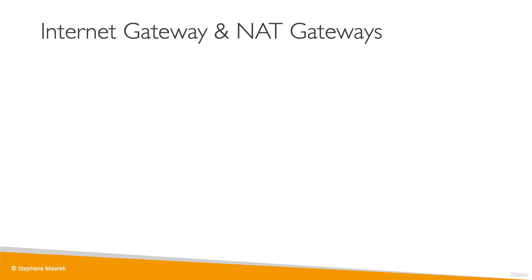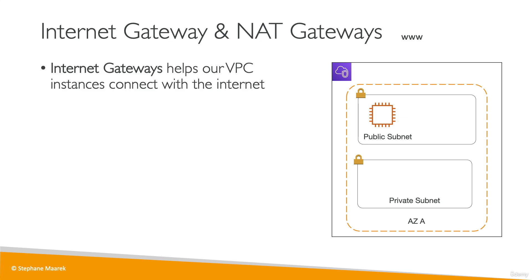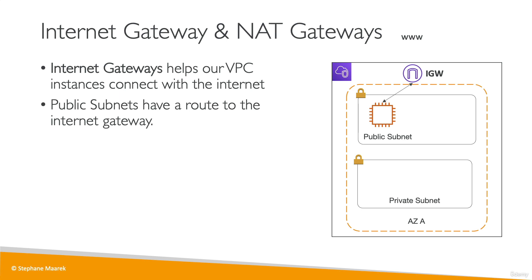How do we define internet access for these subnets? For an EC2 instance in a public subnet to access the internet, we need to create an internet gateway. This internet gateway helps VPC instances connect directly to the internet. The public subnet will have a route to the internet gateway. As soon as we have an internet gateway and a route to it, that makes the subnet a public subnet.